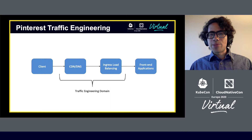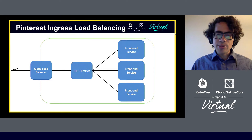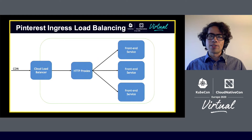One of the first projects that I was able to participate in on the traffic team was replacing our HTTP proxy inside our ingress load balancer. The ingress load balancing architecture at Pinterest consists of a cloud load balancer that goes to a set of HTTP proxies that can do more rich and feature-complete proxying, such as HTTP routing on headers or paths or provide rich stats and observability.